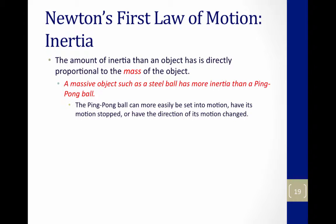Imagine you're crossing a busy street. Do you want a massive truck coming at you, or a very little mass Prius? I think I would rather have the Prius coming at me, because the Prius has less mass, it has less inertia, and it would be able to stop more easily than a massive truck with a lot of inertia. So inertia is proportional to the mass of an object.